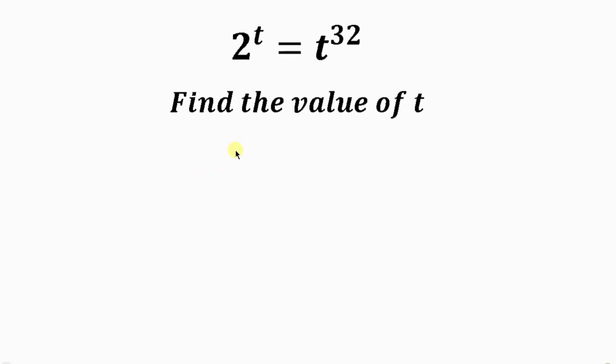What's going on everybody? Welcome back to my YouTube channel. Now let's find the values of t given that 2 to the t is equal to t to the 32.